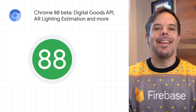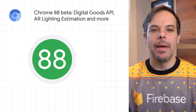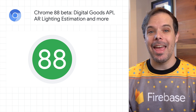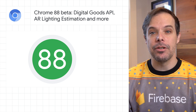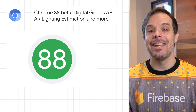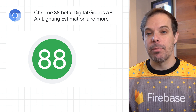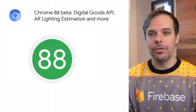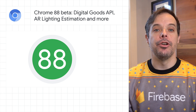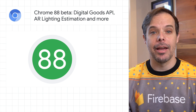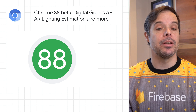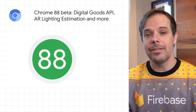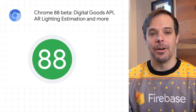Chrome 88 is now in beta with a digital goods API for querying and managing digital products to facilitate in-app purchases from web applications. Also included are new origin trials for AR lighting estimation and more. For all the release details, head on over to the post.